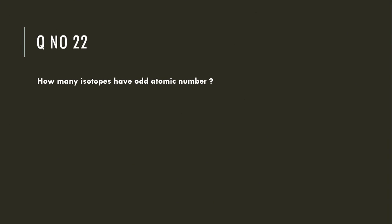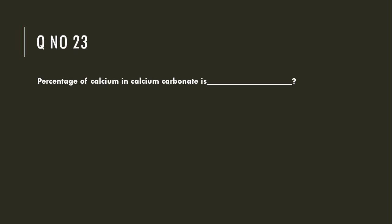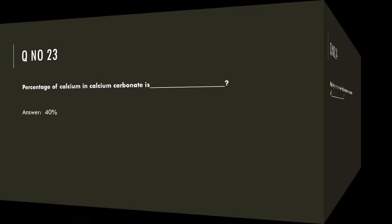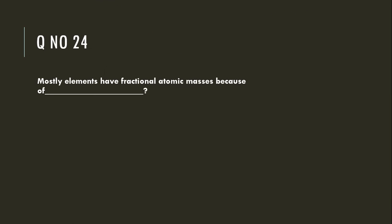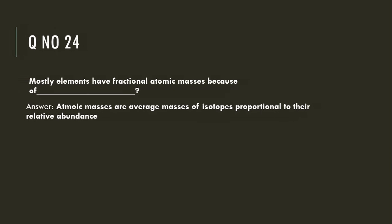How many isotopes have odd atomic number? 86. The percentage of calcium in calcium carbonate is 40%. Most elements have fractional atomic masses because the atomic masses are average masses of isotopes proportional to their relative abundance.